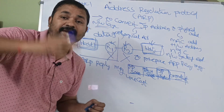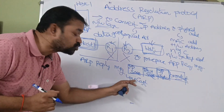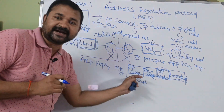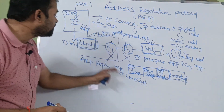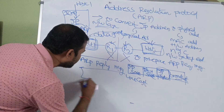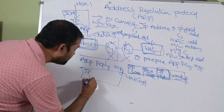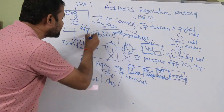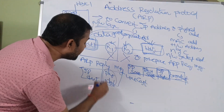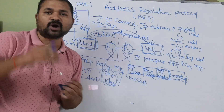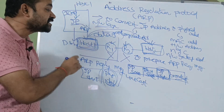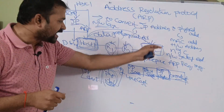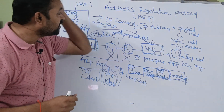Host 2 uses a unicast address — not broadcast or multicast — because host 2 already knows the IP address of host 1 from the request message. So host 2 directly transmits the ARP reply message to host 1. The ARP reply message contains the IP address of the destination machine as well as the physical address of the destination machine. Now host 1 knows the physical address of host 2, and can transmit the corresponding data to host 2, since it has both the IP address and the physical address of the destination. In this way, with the help of ARP, we can convert an IP address to a physical address or MAC address.